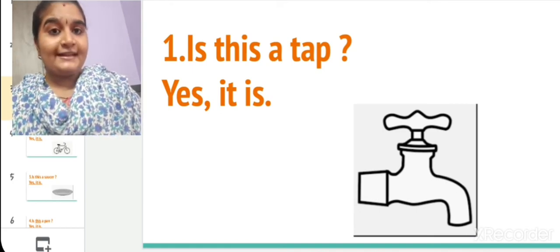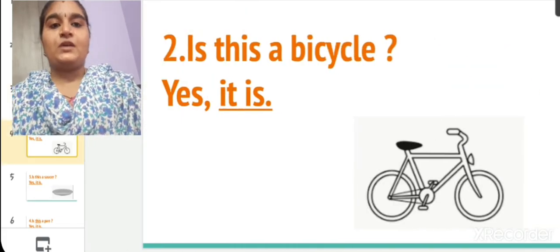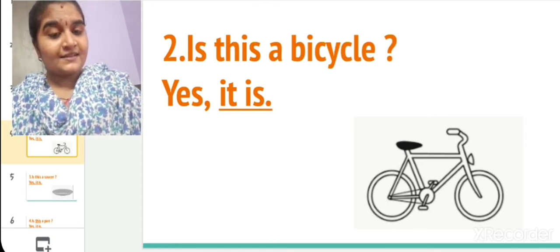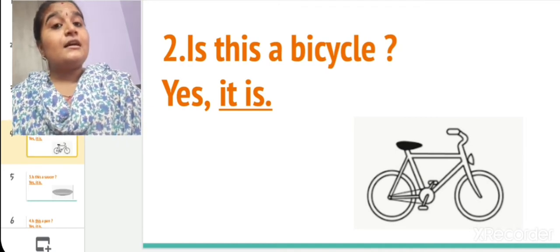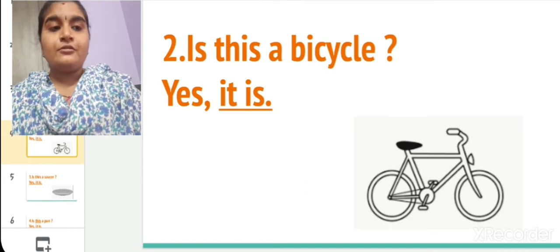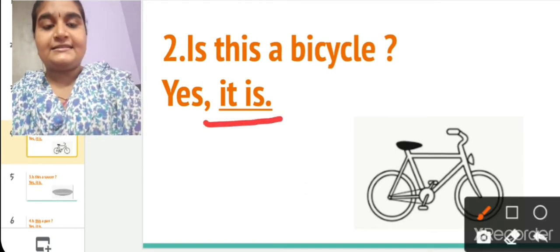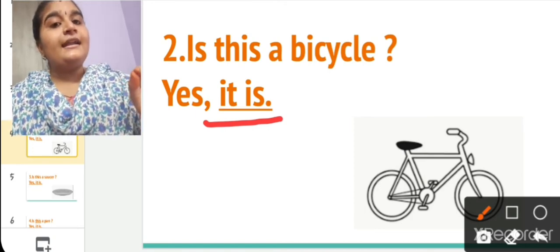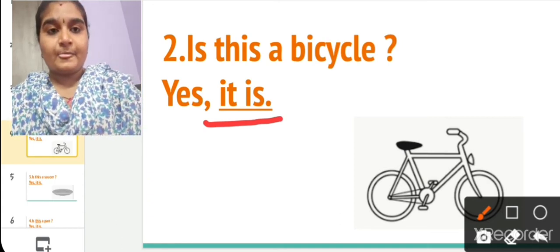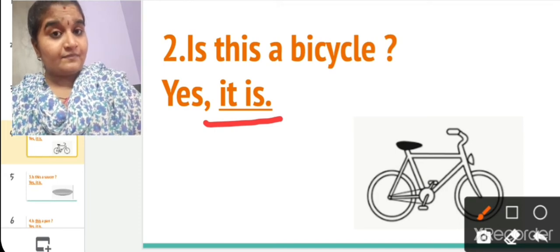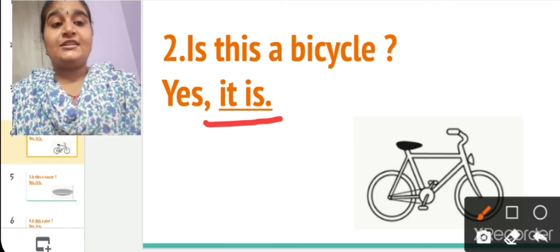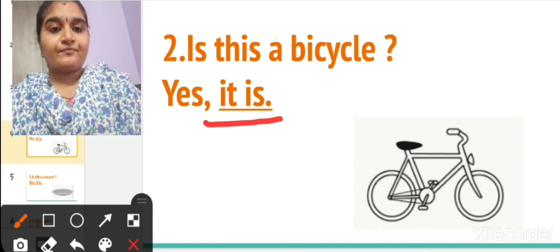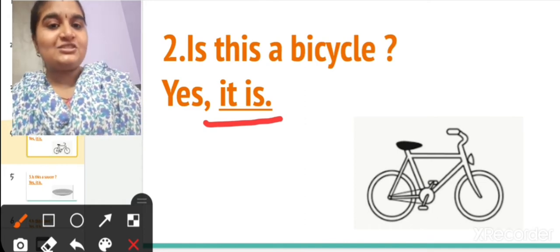Can we go to the next one, children? Next one: Is this a bicycle? Yes, comma, it is. You have to write it is here. Write it is and a full stop. Is this a bicycle? Yes. What picture is this? This is a bicycle.